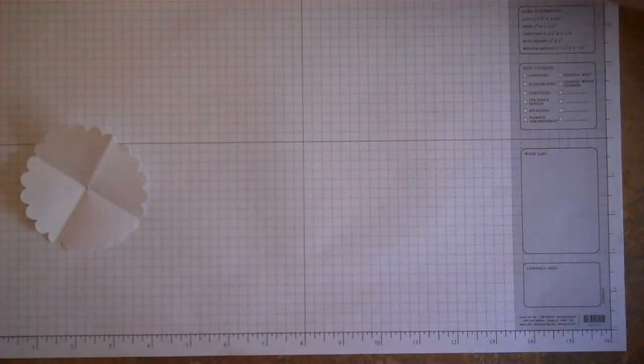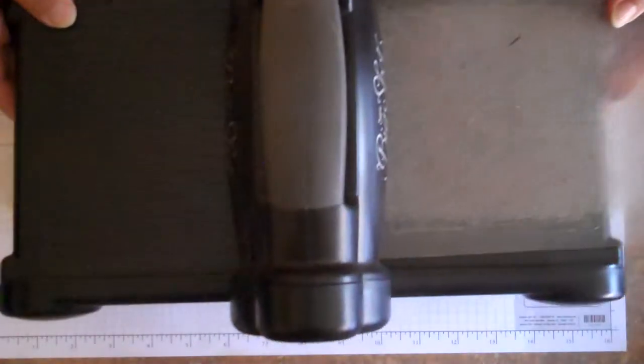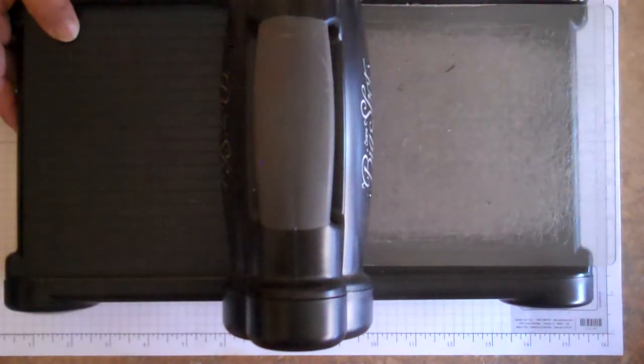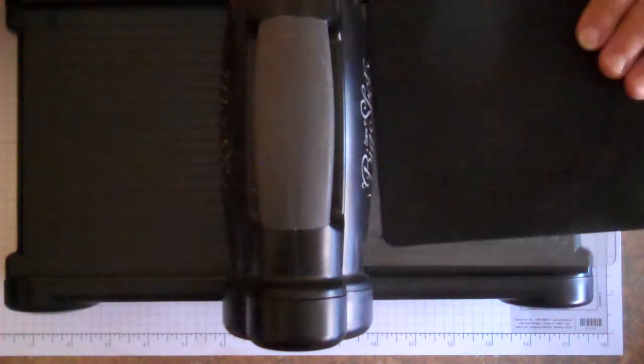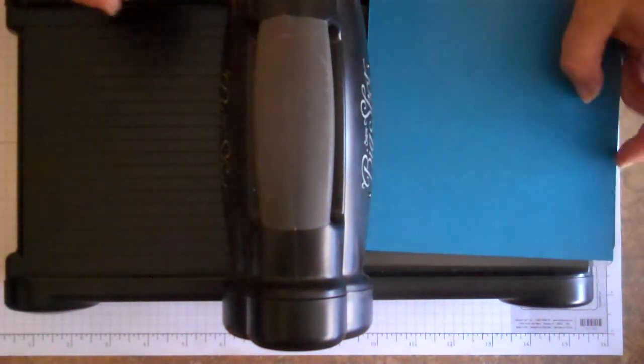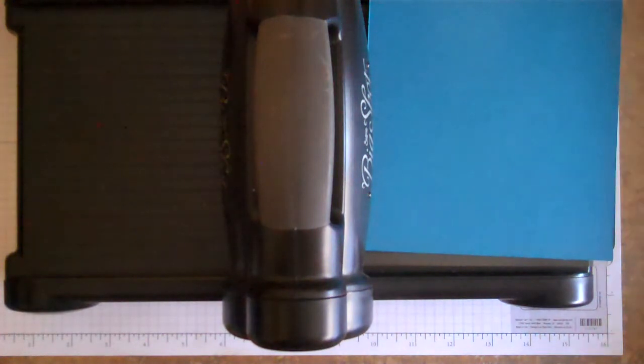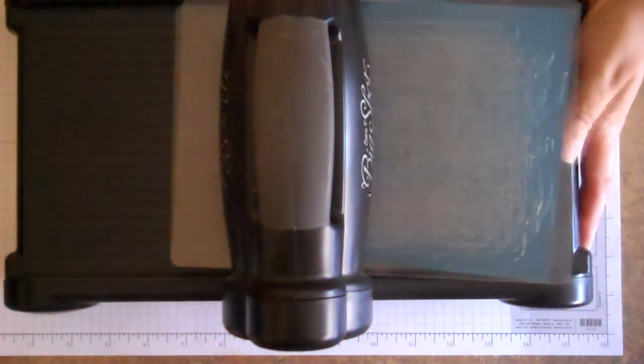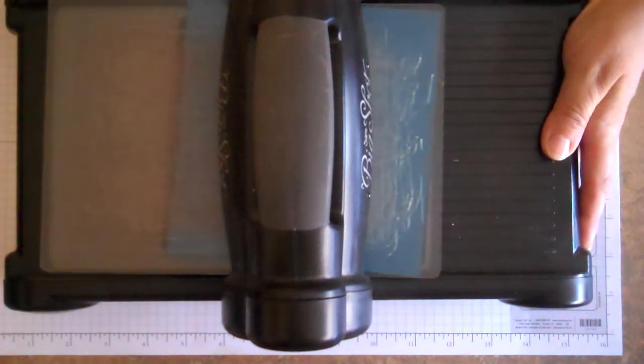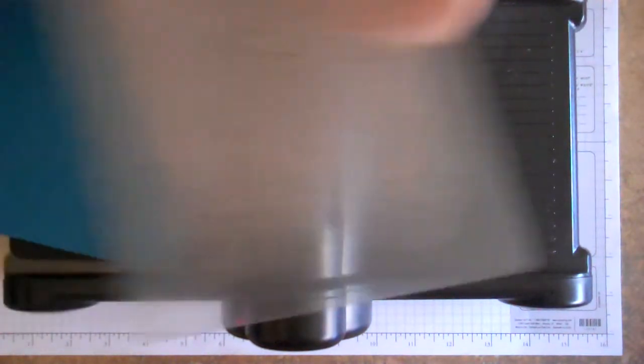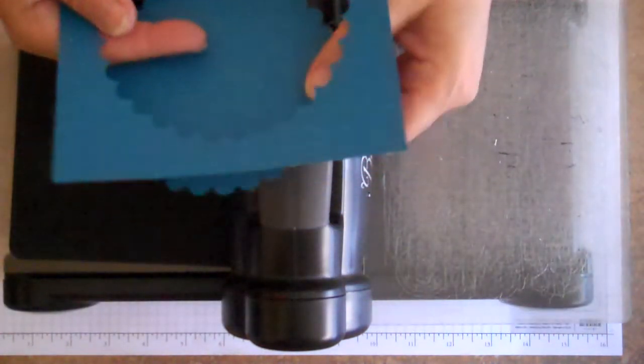So first thing that you're really going to do is take your Big Shot and sandwich your die in there. We'll go ahead and cut a big one out so you can kind of see. I'm using Pacific Point paper and we're going to go ahead and put another acrylic plate down. So we're going to sandwich that right on top and just run it through the Big Shot. And that gives you your Scallop Circle.